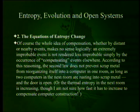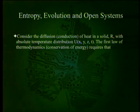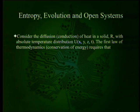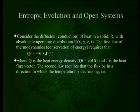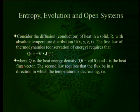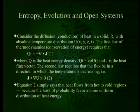And actually it is true that what we do is we take and increase the entropy of crude oil in order to create computers. Consider the diffusion or conduction of heat in a solid r with absolute temperature distribution u, which is a spatial distribution. The first law of thermodynamics — the conservation of energy — requires that. The second law requires that the flux be in the direction in which the temperature is decreasing. In other words, the hot and cold things come to a happy medium rather than more cold to the cold and more hot to the hot.